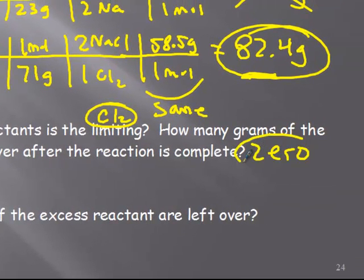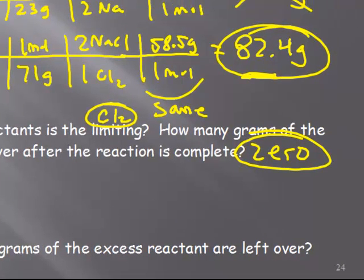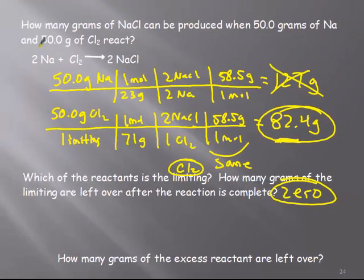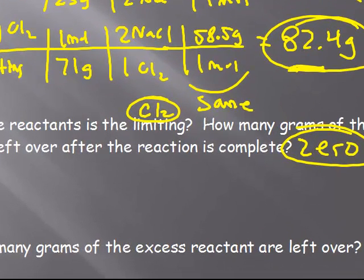How many grams of the limiting reactant are left over? The answer is none — zero grams are left over by definition, because it is the one that is completely consumed in the reaction. How many grams of the excess reactant are left over? I know that all 50 grams of the chlorine is gone and I'm going to make 82.4 grams of the product. This is a synthesis reaction — I start with two elements and make a compound, so I have 50 grams of Na and 50 grams of Cl2, meaning 100 grams total.